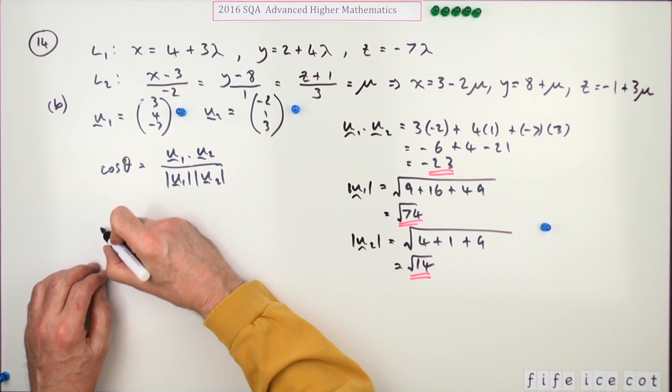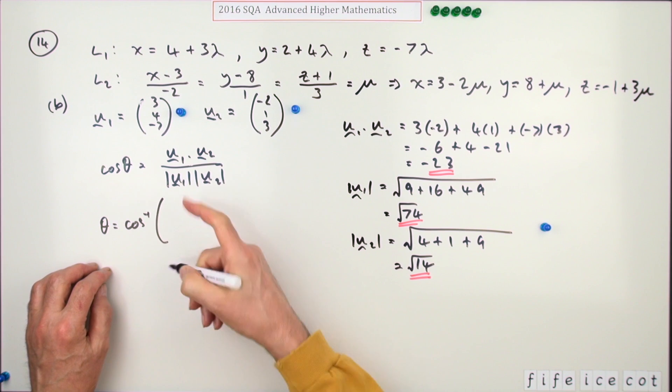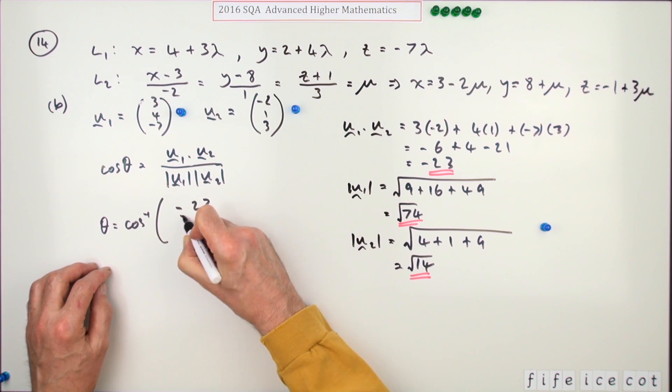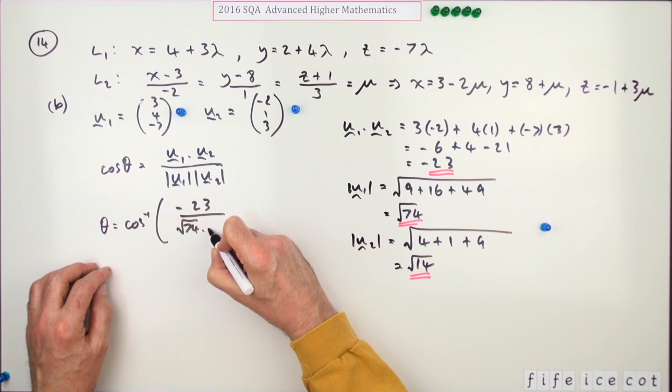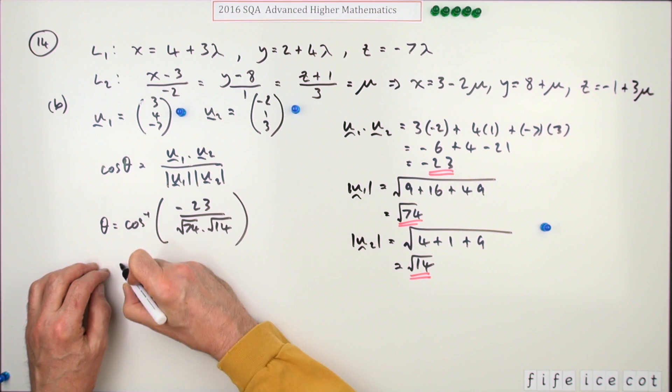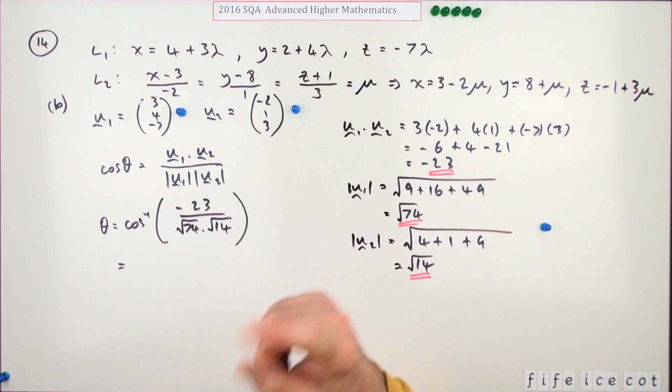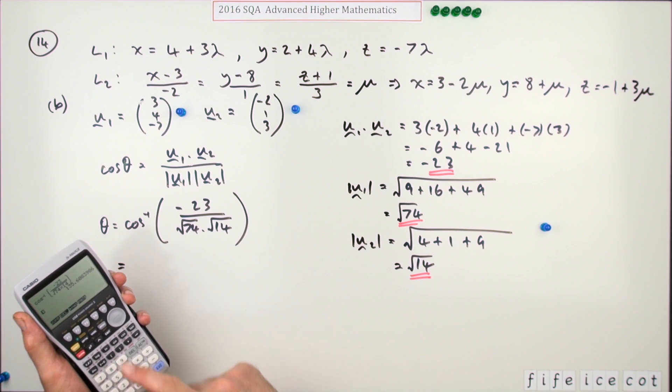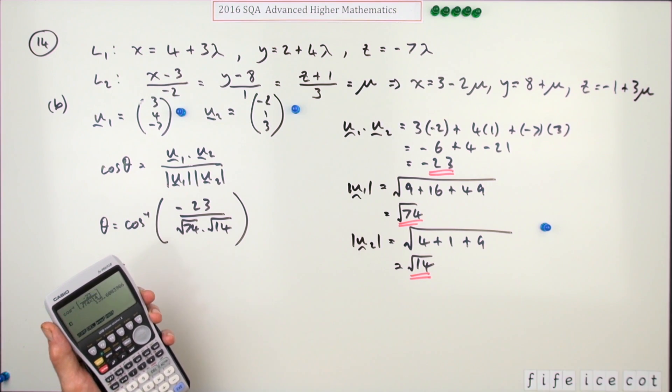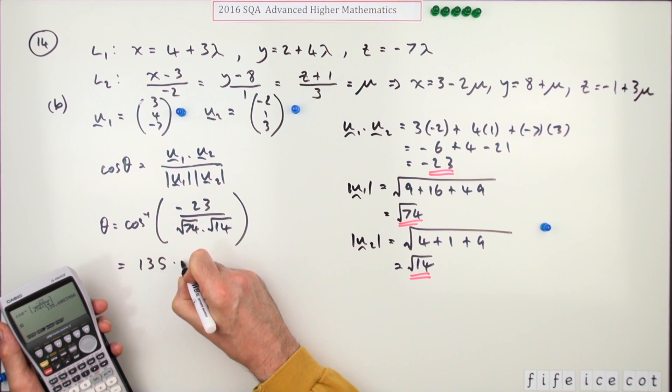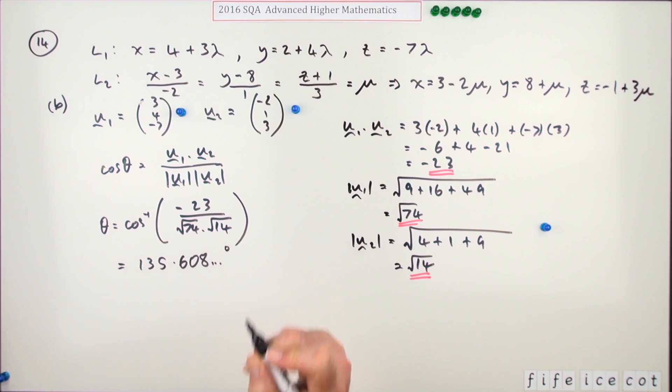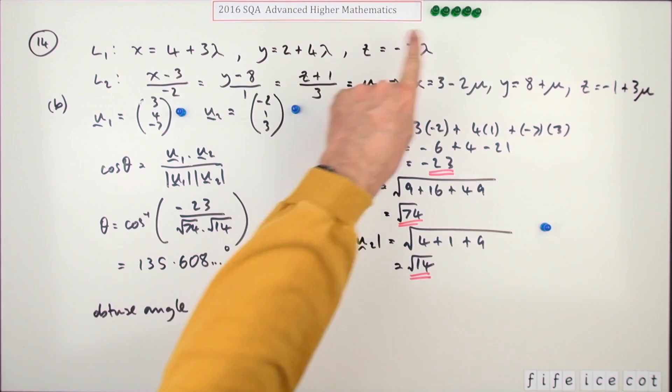Let's find the angle. Theta's going to be the inverse cos of negative 23 over the square root of 74 times the square root of 14. Press the buttons, and you get 135, so you get the obtuse one. 135.608 and so on, in degrees. Just round it off however you like. Obtuse angle equals 135.6 degrees. There's the fourth mark, and the ninth mark altogether.